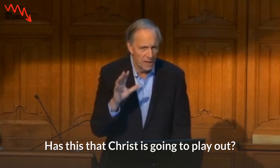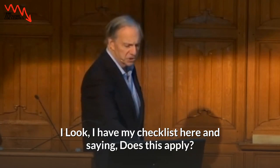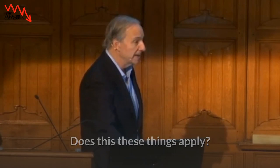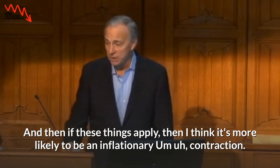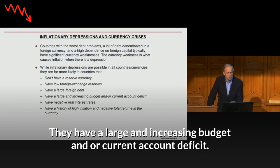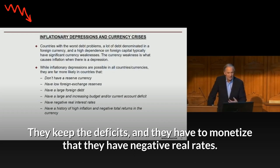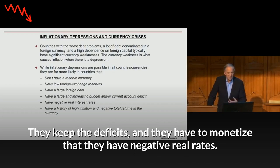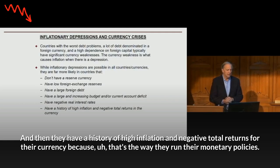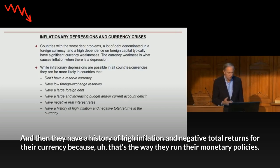When I look at how a crisis is going to play out, I have a checklist. If these things apply, I think it's more likely to be an inflationary contraction: they don't have a reserve currency; they have low foreign exchange reserves; they have a large foreign debt; they have a large and increasing budget and/or current account deficit; they keep those deficits and have to monetize them; they have negative real interest rates — rates low in relationship to inflation — so they're trying to monetize domestic debt; and they have a history of high inflation and negative total returns for their currency.